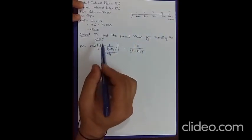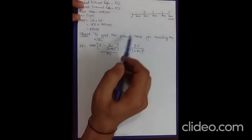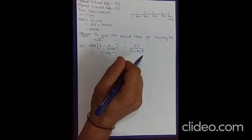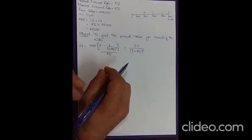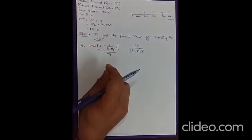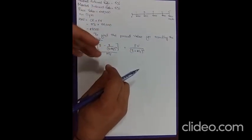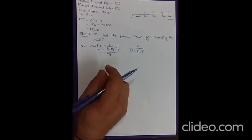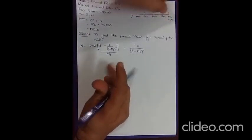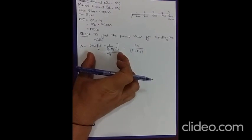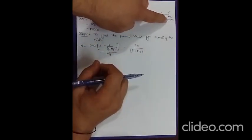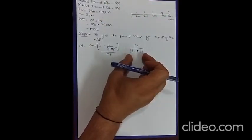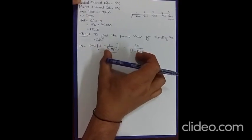Our first step in accounting for the note receivable is to calculate how much value should be used to record it. Long-term note receivables are recorded on a present value basis. Since the $8,000 payments form an ordinary annuity, I apply the present value of an ordinary annuity formula. The $100,000 is a one-time cash flow, not an annuity, so I use the simple present value formula for that portion.